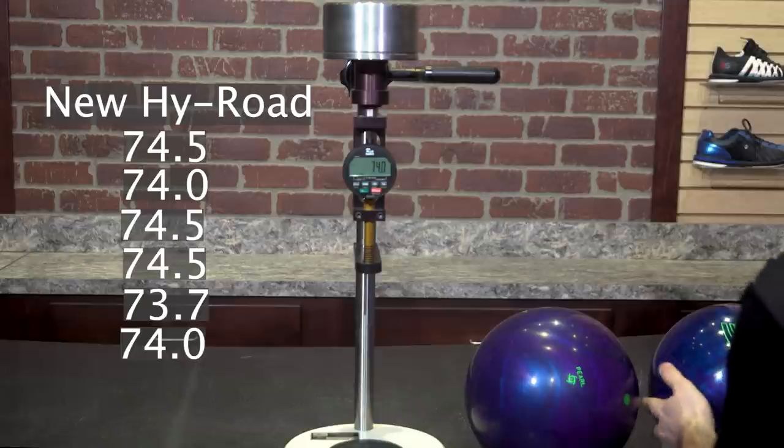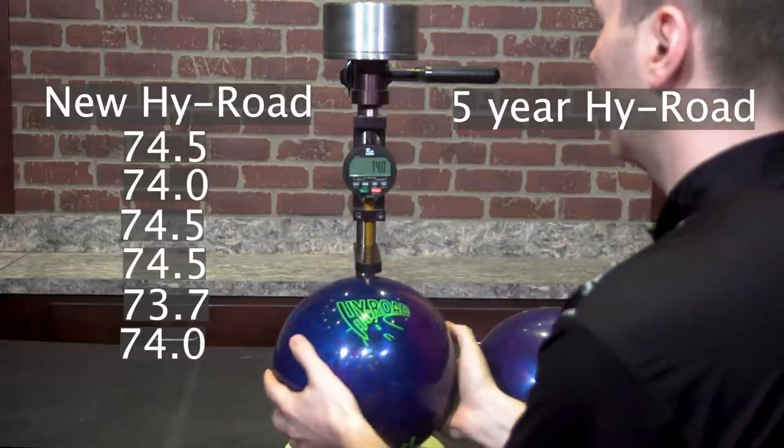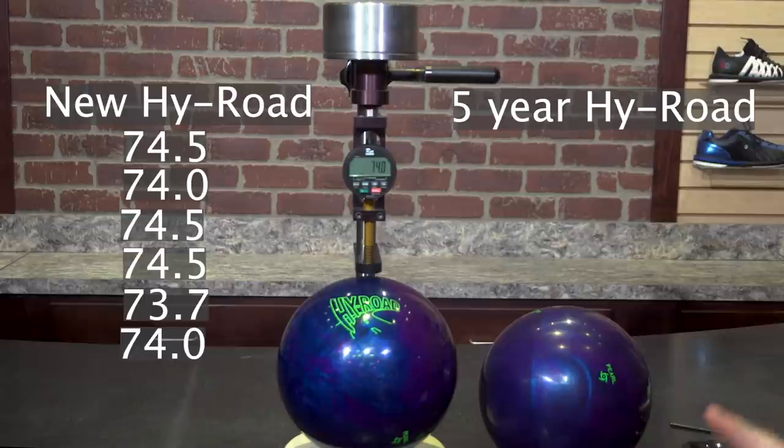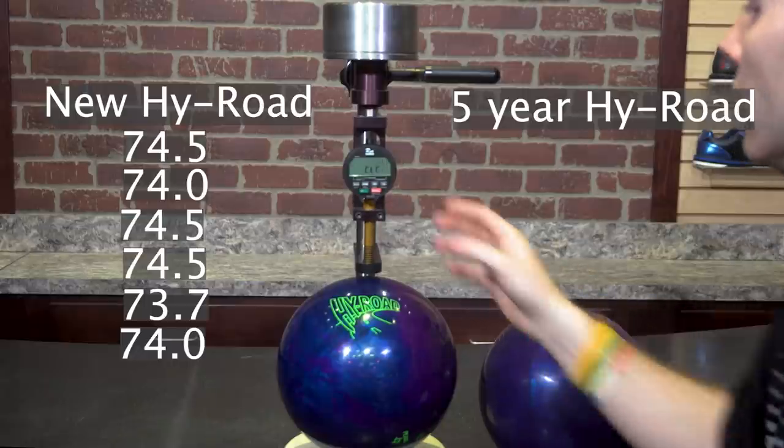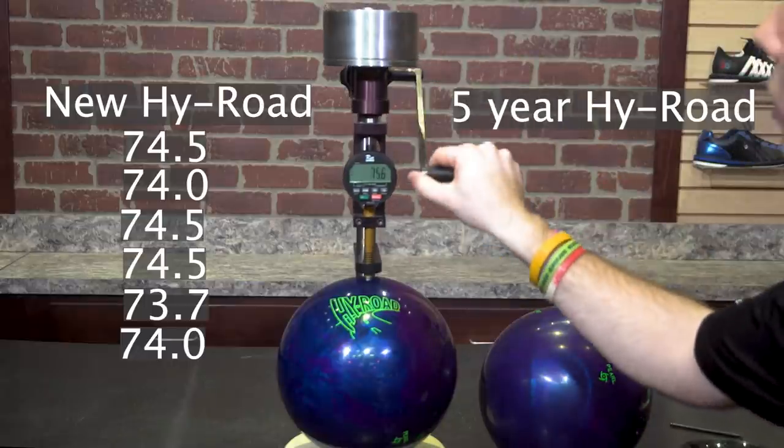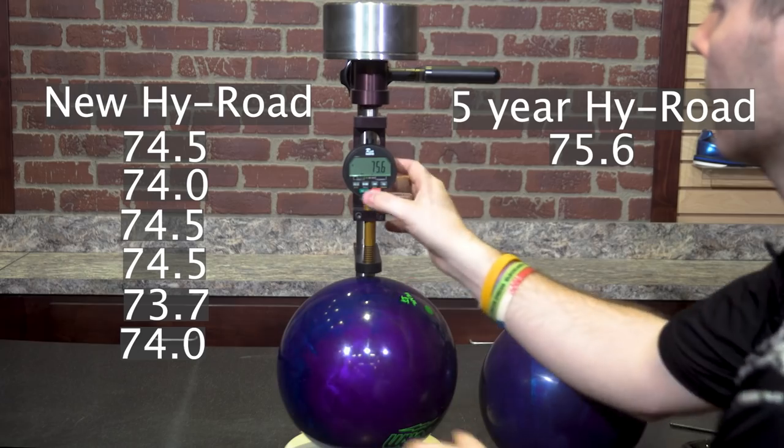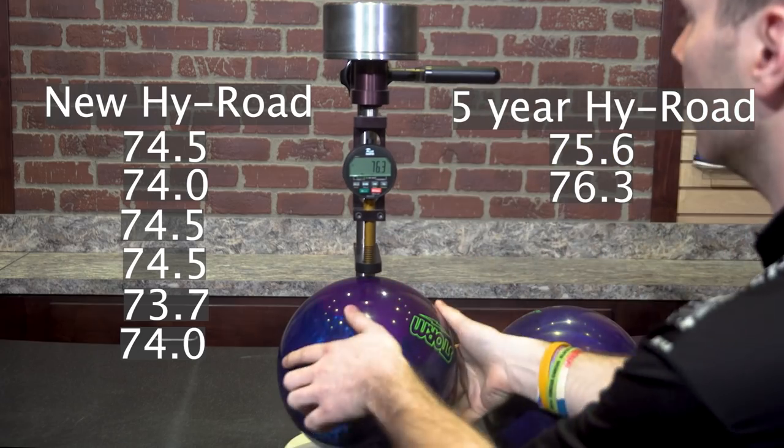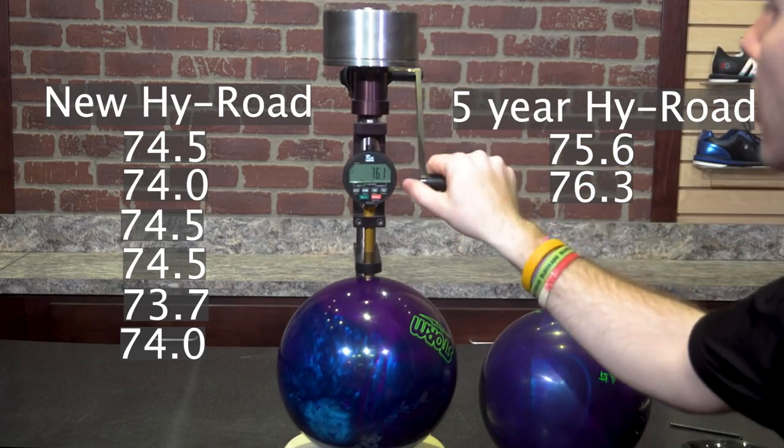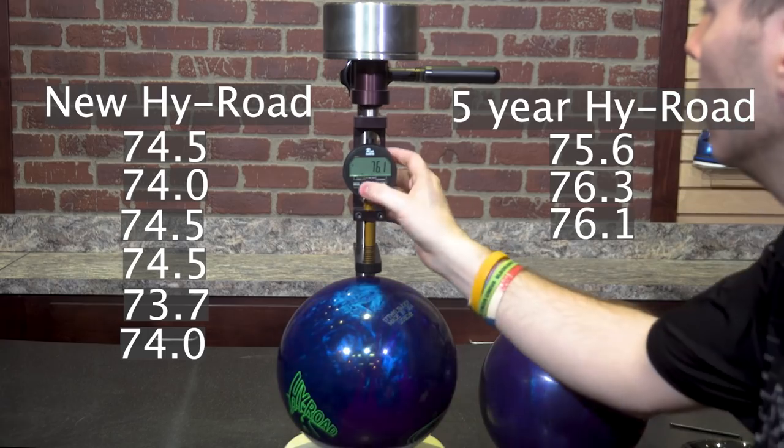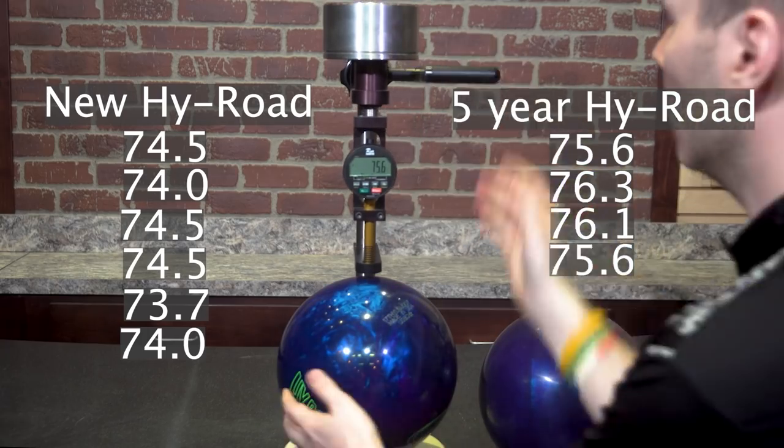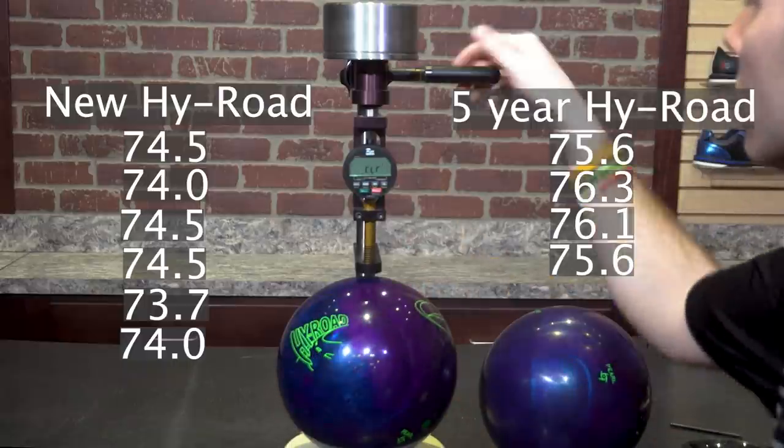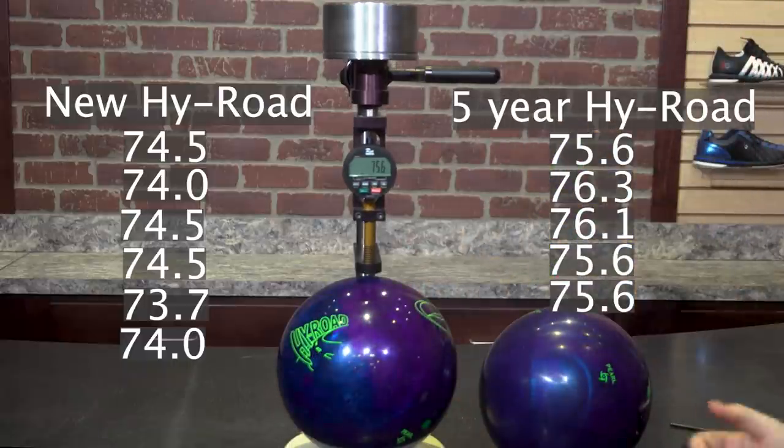If we check this exact same ball model made out of the same material, just now it's been sitting for five years, you're going to see higher overall hardness readings. This is just because as these bowling balls sit and age, they continue to cure, and they will show higher hardness readings the longer that they sit.